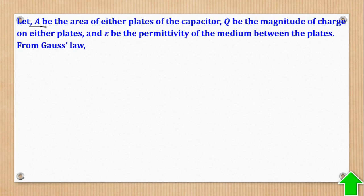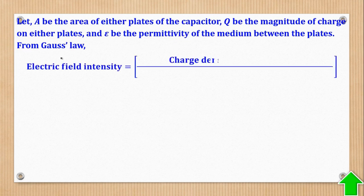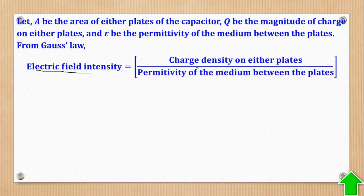Then we shall also let A be the area of either plate. So the plates, the capacitor plates must have the same area. Q will also be the magnitude of charge on either plate, and ε will be the permittivity of the medium between the plates. So previously, in electrostatics, we talked about this permittivity and I believe now we are conversant with it. So ε is the permittivity of the medium. Therefore, from Gauss's law, it implies that electric field intensity is equal to charge density on either plate over permittivity of the medium between the plates.